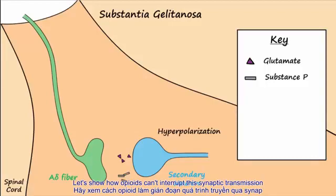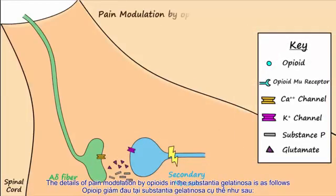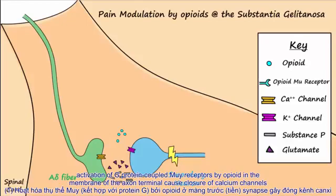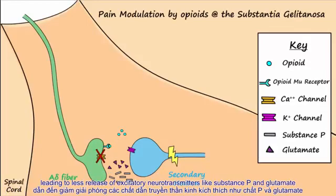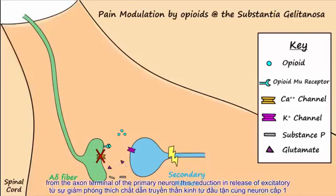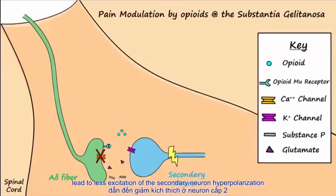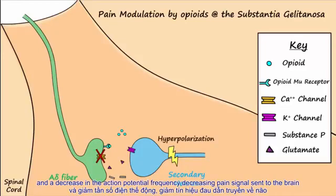Let's show how opioids can interrupt this synaptic transmission. Activation of G-protein-coupled mu-receptors by opioids in the membrane of the axon terminal causes closure of calcium channels, leading to less release of excitatory neurotransmitters, like substance P and glutamate, from the axon terminal of the primary neuron. This reduction in release of excitatory neurotransmitters leads to less excitation of the secondary neuron, hyperpolarization, and a decrease in action potential frequency, decreasing pain signals sent to the brain.